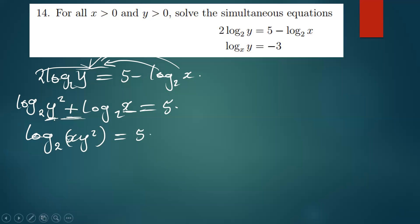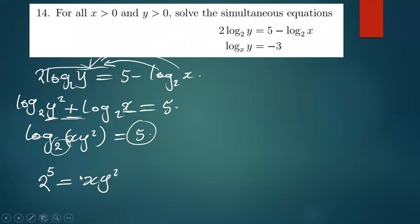So we convert this to exponential form. The base 2 remains the base, this 5 is the power, and we say this is equal to x·y². So 2 to the power 5 gives us 32. We have x·y² being equal to 32. This is our first equation.